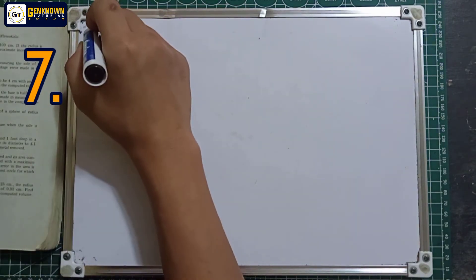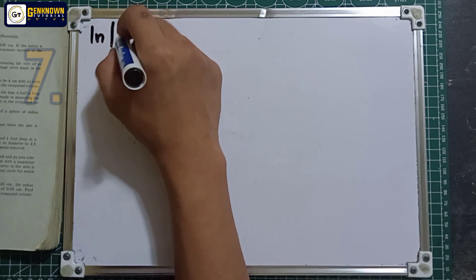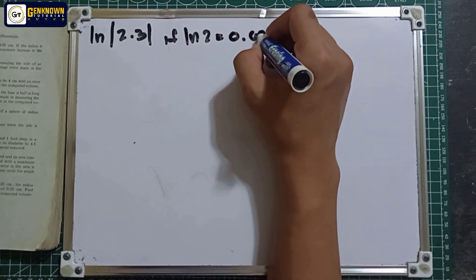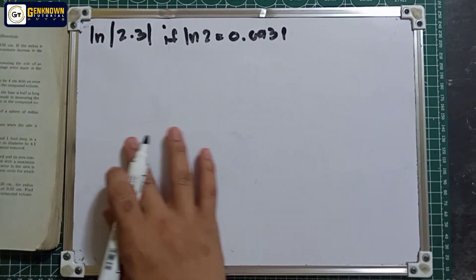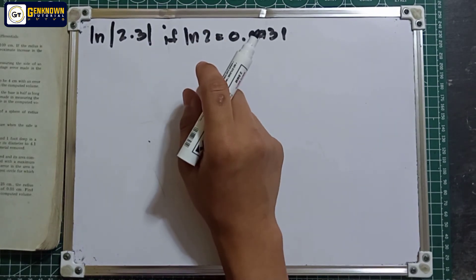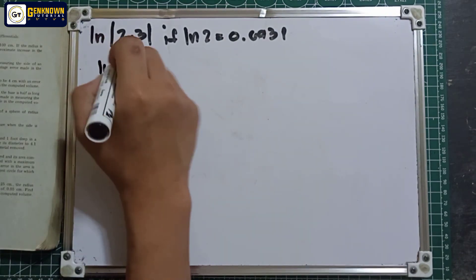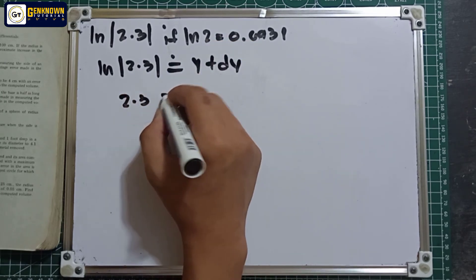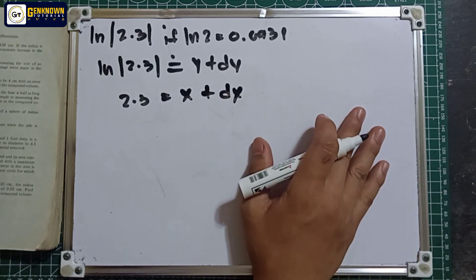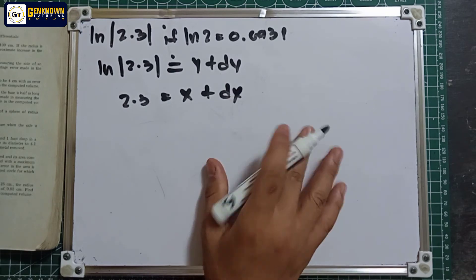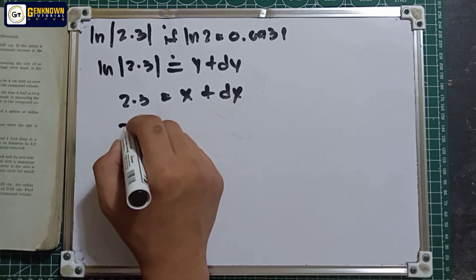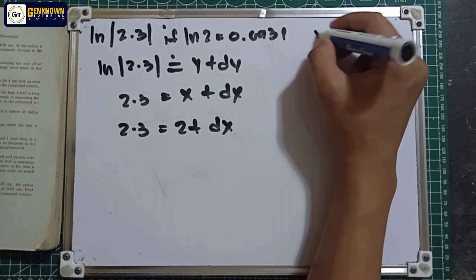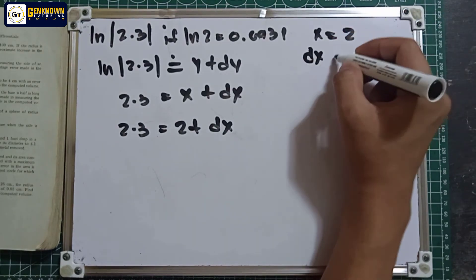Number 7: the natural logarithm of 2.3, given that ln 2 equals 0.6931. We already have a clue about what value to use. Let ln(2.3) be approximately equal to y plus dy, and 2.3 equals x plus dx, where x equals 2. So 2.3 equals 2 plus dx, meaning dx equals 0.3.